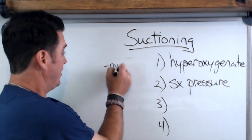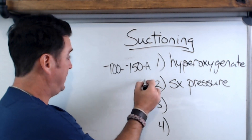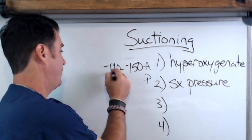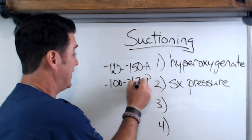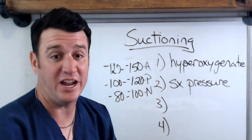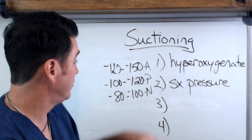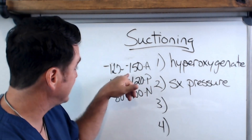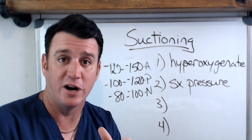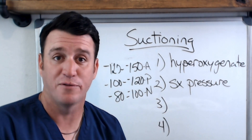For adults, negative 100 to negative 150 mmHg. Pediatrics are negative 100 to negative 120. Neonates are negative 80 up to negative 100. These changed recently — they used to be negative 60 to 80, 80 to 100, and 100 to 120 for adults, but they've been raised slightly. Now max is negative 150 for an adult, negative 120 for a pediatric, and negative 100 for a neonate. Proper suction pressure reduces tissue trauma, atelectasis risk, and hypoxemia.